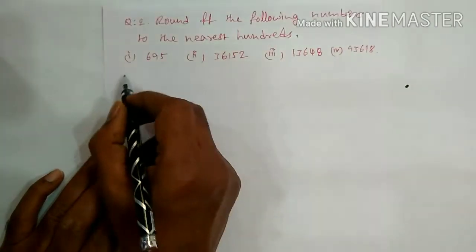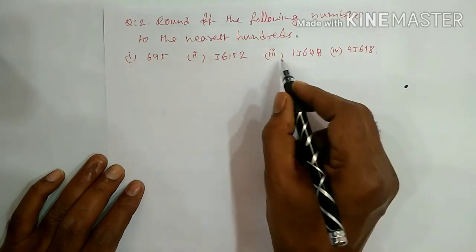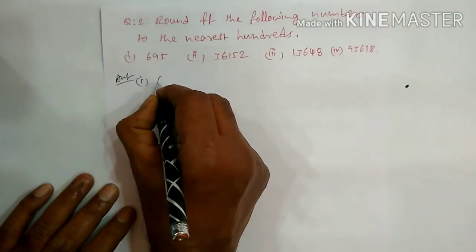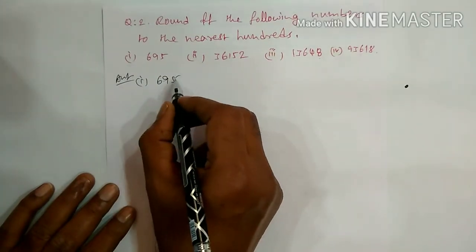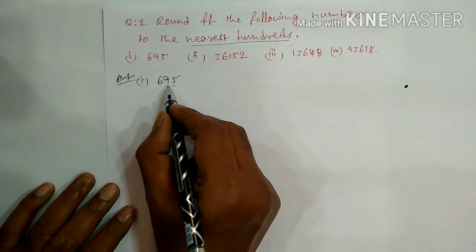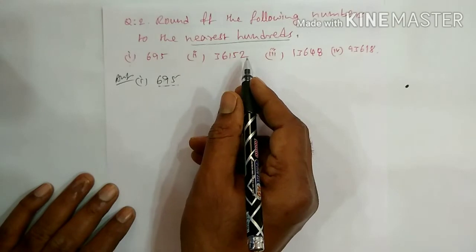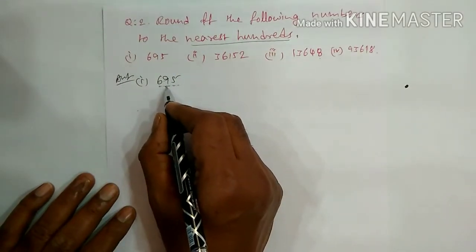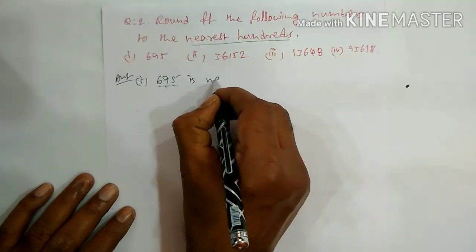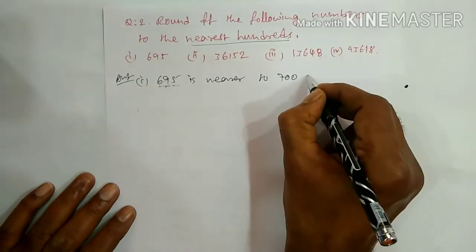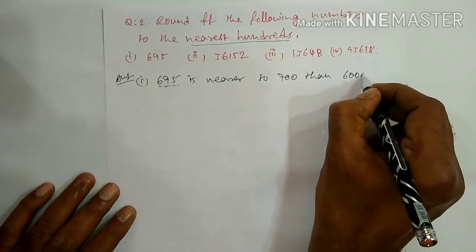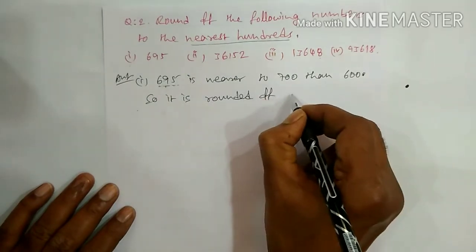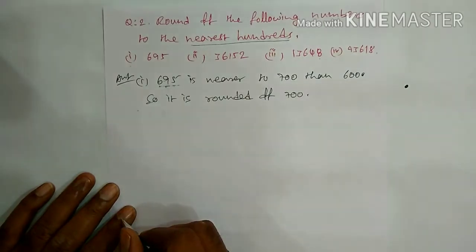Question number 2: round off the following numbers to the nearest hundreds. First question: 695. Second: 36152. Third: 13648. Fourth: 93618. For 695, nearest hundreds means we look at the hundreds range: 600 to 700. Since 695 is nearer to 700, it is rounded off to 700.